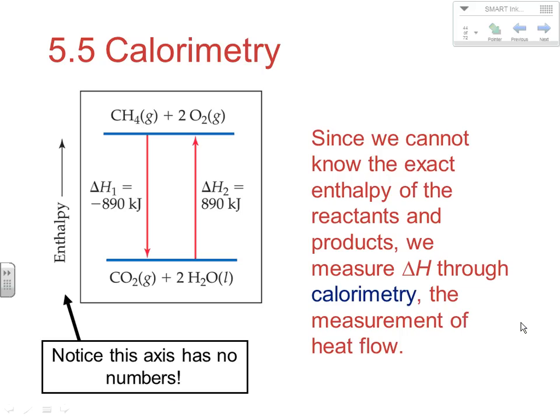Welcome to AP Chemistry at Hononega High School. I'm Brian Brown and today we'll be looking at Section 5.5 dealing with calorimetry. It's our third set of notes dealing with thermochemistry from Chapter 5. Since we cannot know the exact enthalpy of reactants and products, we measure delta H — changes in enthalpy — through processes like calorimetry, the measurement of heat flow.